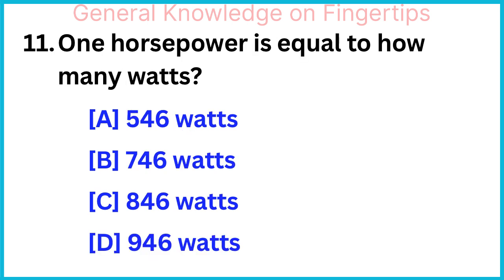One horsepower is equal to how many watts? 746 watts.